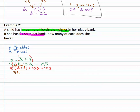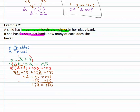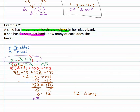Solving by distributing gives five D plus fifteen plus ten D equals one ninety-five. Combining like terms gives fifteen D plus fifteen equals one ninety-five. Subtracting fifteen from both sides gives fifteen D equals one eighty. Dividing both sides by fifteen gives D equals twelve — there are twelve dimes. We still need the number of nickels, and our equation says N equals D plus three, so N equals twelve plus three, which means N equals fifteen. There are fifteen nickels.